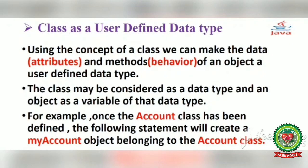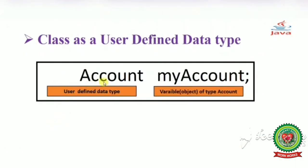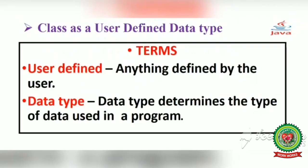So students, using the concept of a class, we can make the data and methods of an object a user defined data type. The class may be considered as a data type and the object as a variable of that data type. Once the account class has been created or defined, the statement account my_account creates a my_account object belonging to the account class. So today we have discussed: user defined — anything defined by the user — and data type — the type of data used in a program.